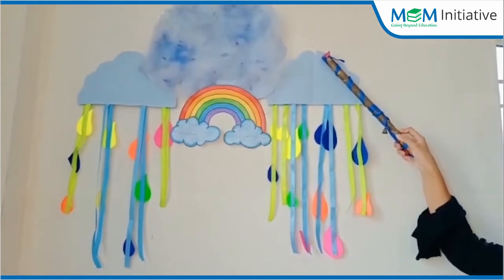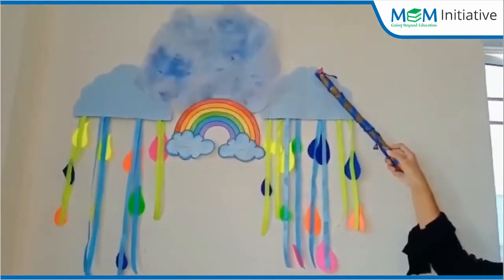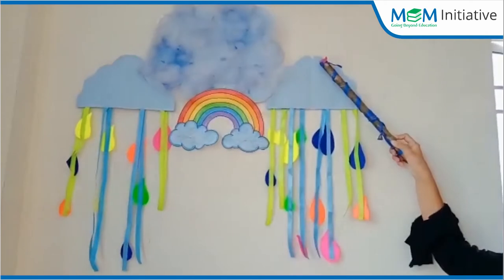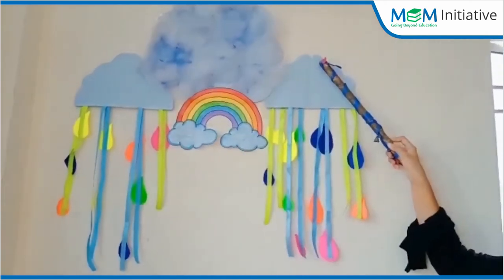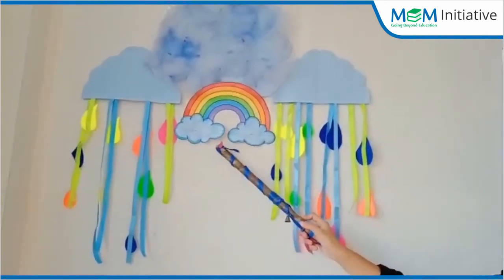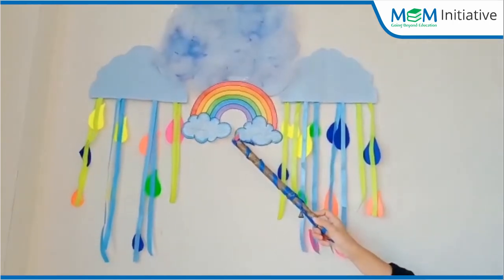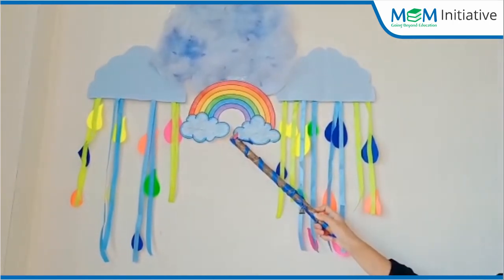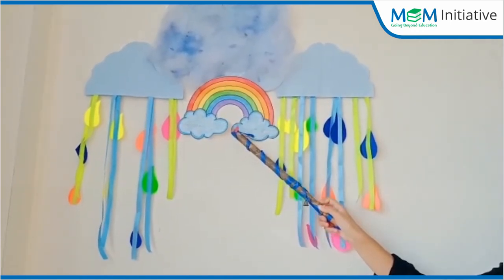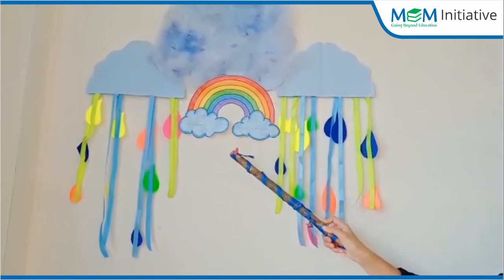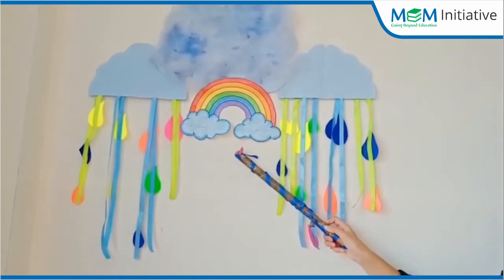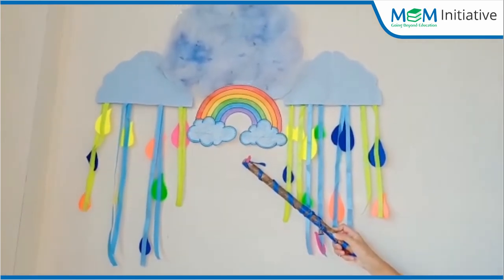Andhera ho jaata hai baarish ke mausam mein — it becomes cloudy, hai na. And then look what we have over here — oh wow, rainbow! This is so colorful, look at the different colors of the rainbow, it's so beautiful. Children, it's so nice to go out and dance in the rain, isn't it? So, all these things ma'am has made only for you. Chalo, let's start today with another activity.